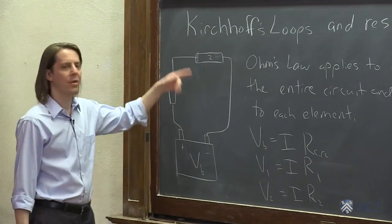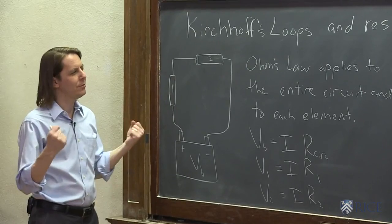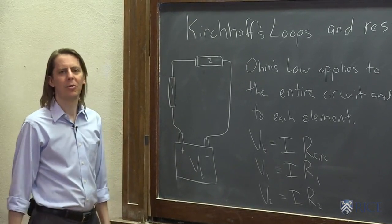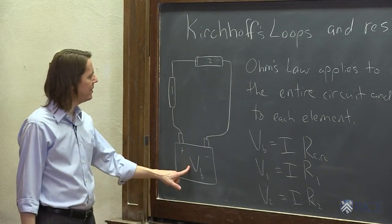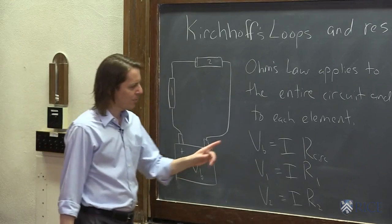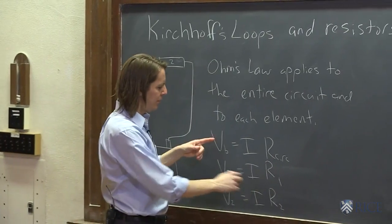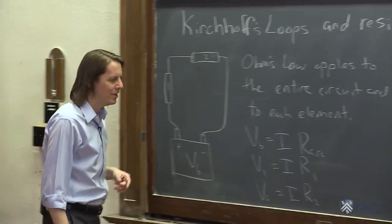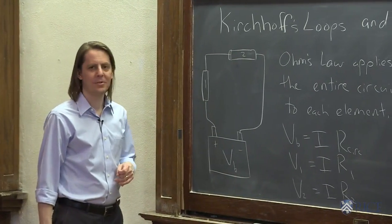So we can apply Ohm's Law three times. We have generated three equations. Surely, we're done. Three equations, three unknowns. Well, we have more than three unknowns. Let's see how many unknowns we have. We have V battery, R1 and R2, but we don't know V1, V2, the current, or Rcircuit. So we have a few too many unknowns. So we need more information.